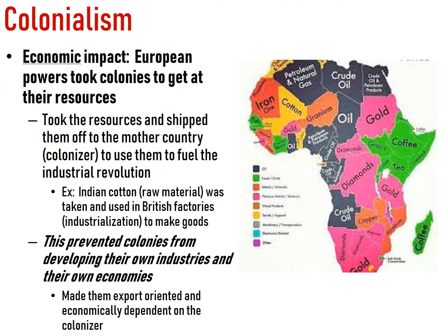The final impact is the economic impact. The European powers took colonies to get their resources and then sent them back to their home country. When the UK colonized India, they took raw cotton back to British factories during the Industrial Revolution to make cotton goods. This prevented the colonies from developing their own industries and economies. India was trapped at exporting cotton. When they're no longer a colony, they just keep exporting cotton, but that's not a long-term goal. If they had gone through industrialization on their own, they could have made their own products and generated much more wealth. Colonialism really hindered the economic development of these countries.